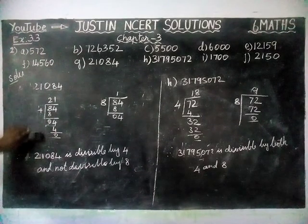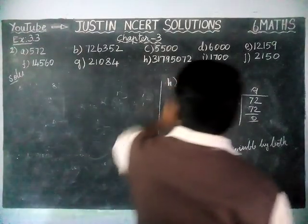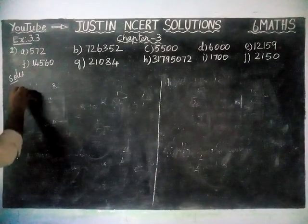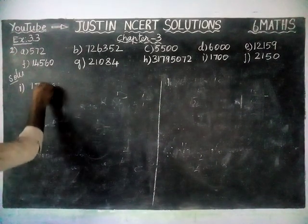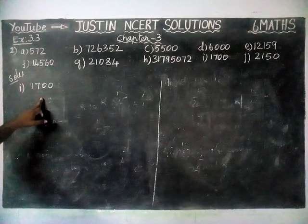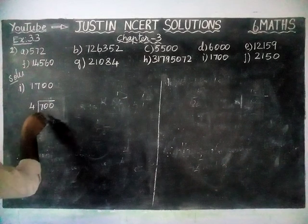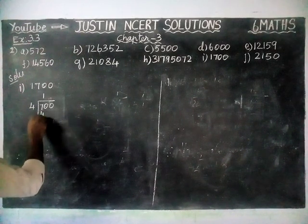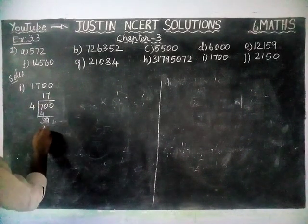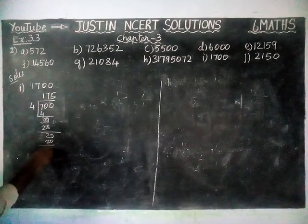Next, option I: 1700. Here the last 2 digits are 00, so we can say this number is divisible by 4. We will see the proof. Dividing 700 by 4: in 7, we have 1 four, remaining 3, giving 30. 7 fours are 28, remaining 2, giving 20. 5 fours are 20, remaining 0. So the given number is divisible by 4.